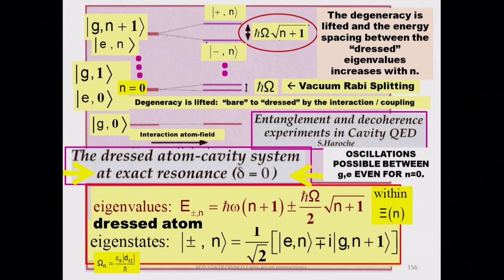The degeneracy of these two states is essentially lifted by the coupling between the quantum electromagnetic field and the atom. This can happen even if the number of photons is zero, if the atom is originally prepared in the excited state. It must be prepared in the excited state so that it can give one photon to the cavity and then reabsorb it, give it back, reabsorb it, and oscillate this way.